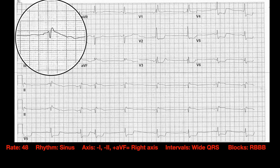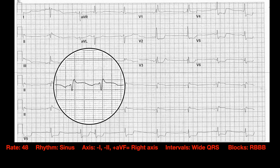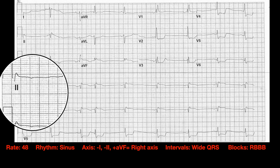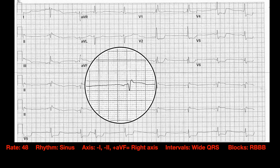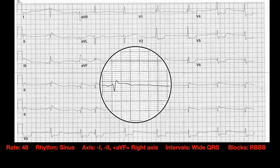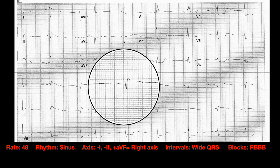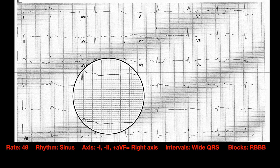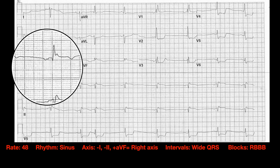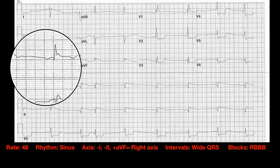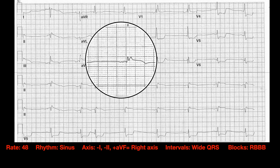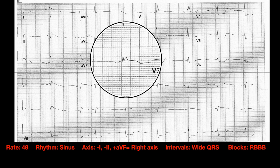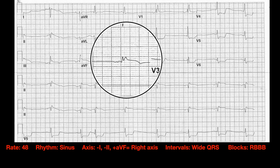How about the inferior leads? In the rhythm strip of lead two, we see the baseline is kind of right in the center, but when we move on over to the ST segment it looks like that is elevated — maybe a millimeter, one little box, maybe just under. Kind of concerning. The same concern in lead three — there might be a little bit of ST elevation depending on where you measure. In AVF, also in the vascular territory, there does look to be a little bit of elevation, though it's hard to call it definitively a millimeter.